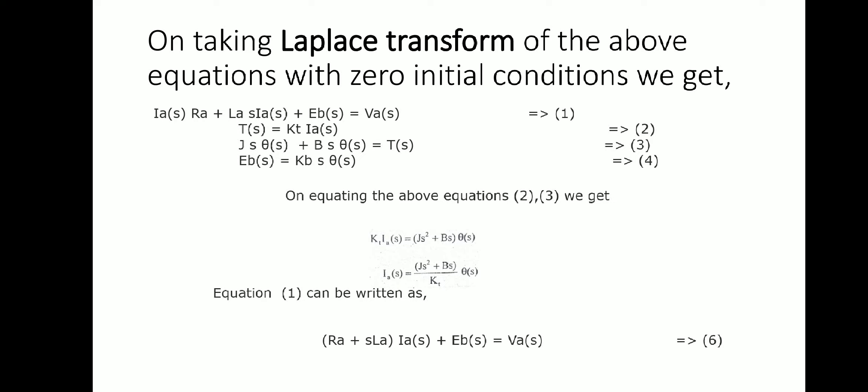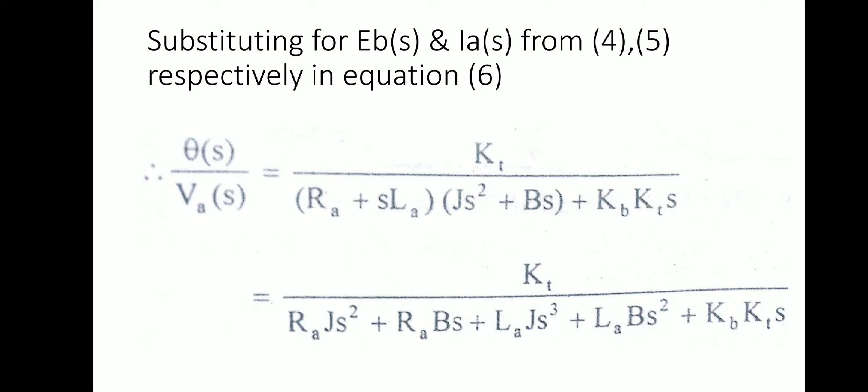Equating the equations, we get Ia(S) = (J·S² + B·S) / KT × θ(S). The transfer function is defined as output to input — here output is the angular displacement θ(S) and input is the armature voltage Va(S). The transfer function is: θ(S)/Va(S) = KT / [Ra·J·S² + Ra·B·S + La·J·S³ + La·B·S² + KB·KT·S].